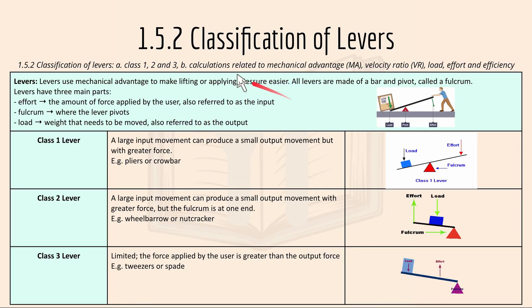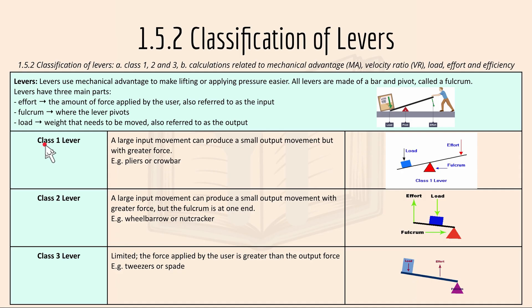1.5.2 is the classification of levers — class 1, 2, and 3 — with calculations related to mechanical advantage, velocity ratio, load, effort, and efficiency. Levers use mechanical advantage to make lifting or applying pressure easier. All levers are made of a bar and pivot called a fulcrum, and have three main parts: the effort, which is the force applied by the user; the fulcrum, where the lever pivots; and the load, the weight to be moved. For a class 1 lever, a large input movement can produce a small output movement but with a greater force, like a crowbar.